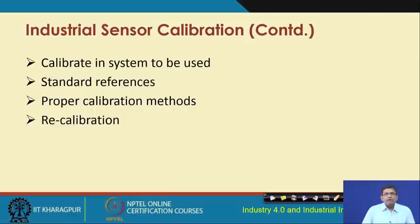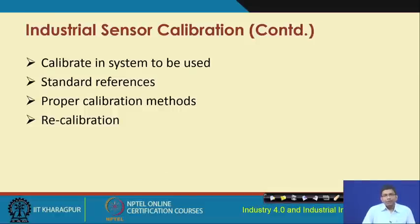It is required to calibrate sensors in a system and also to have some kind of standard reference against which the calibration is going to be done, because if you do not know what the sensor is supposed to do and how much the actual measurement should be, you cannot do the calibration without that standard reference. Proper calibration methods will have to be used, and if required, certain sensors that do not behave the same way over time will have to be re-calibrated.